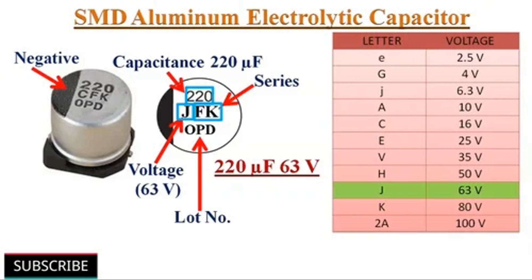Where E is the energy stored in joules, C is the capacitance in farads (F), and V is the voltage across the capacitor in volts.